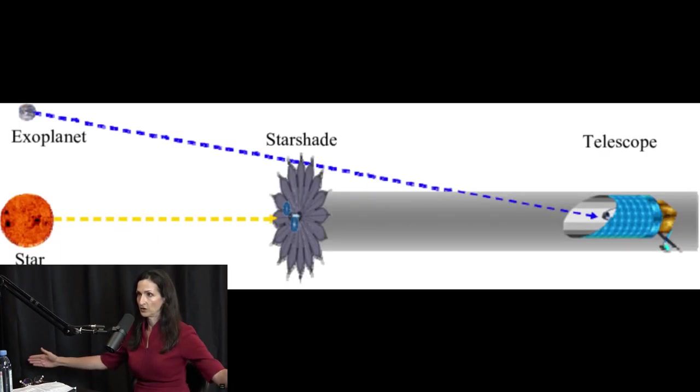Because of the starshade, how do you see the starshade precisely enough to control it? Because if you're shining a flashlight, you know the beam spreads out. So the starshade has a beacon, an LED or a laser.